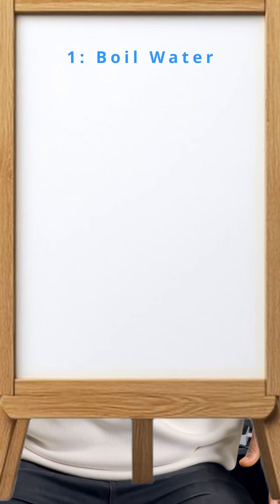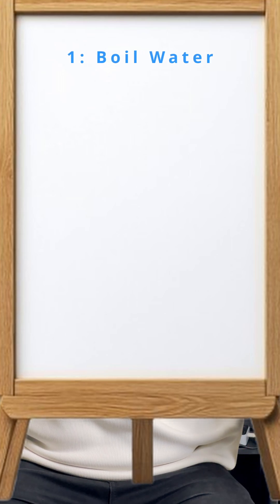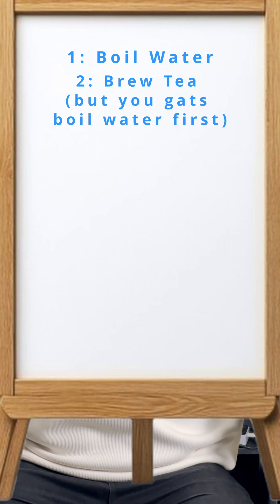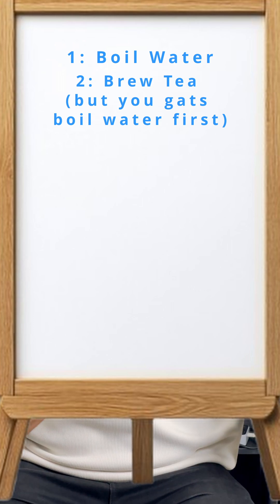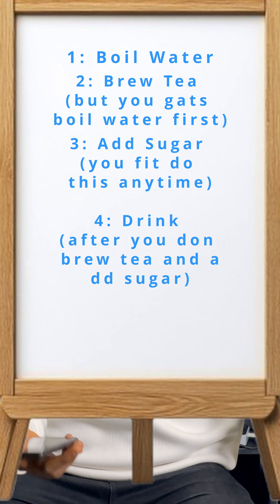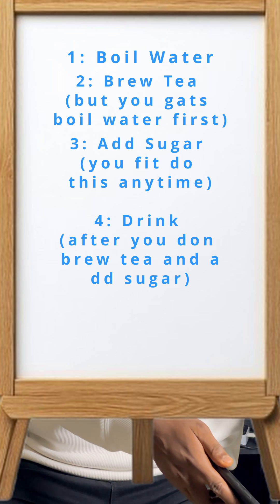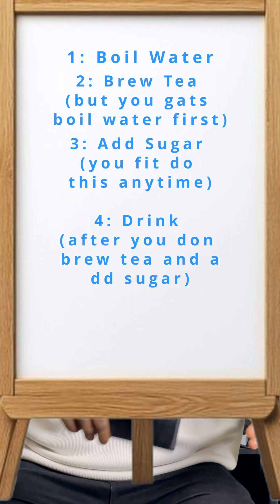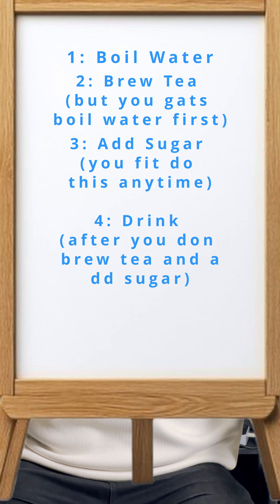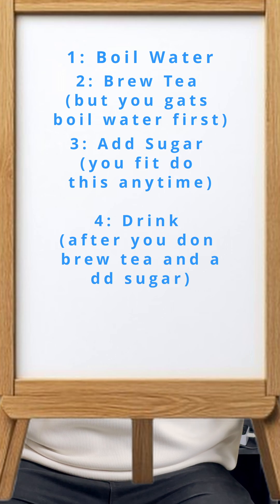Imagine we have these tasks: number one, boil water; number two, brew tea — which means we must boil water before we brew the tea. Number three, add sugar — we can do this at any time, even after boiling water but before brewing the tea. Number four, drink the tea — this must happen only after you boil water, brew the tea, and add sugar.